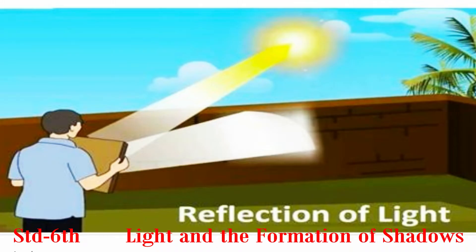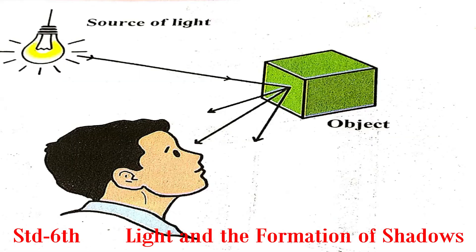Reflection of Light: The rays of light falling on an object from a source of light are thrown back from the surface of that object. This is called Reflection of Light.